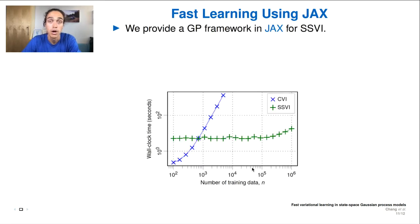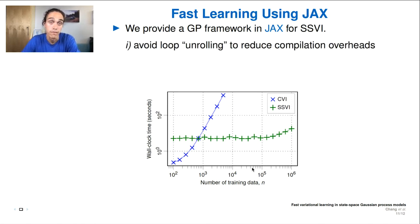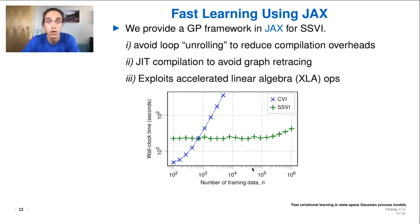The second part of the paper is dealing with how to implement the state space GP in an automatic differentiation framework. And the features that we use in JAX are essentially, we avoid loop unrolling and so are able to reduce the overhead of each operation, the compilation overhead. The JIT compilation also helps us to avoid graph retracing. And then finally, we can use the XLA operations or accelerated linear algebra operations.